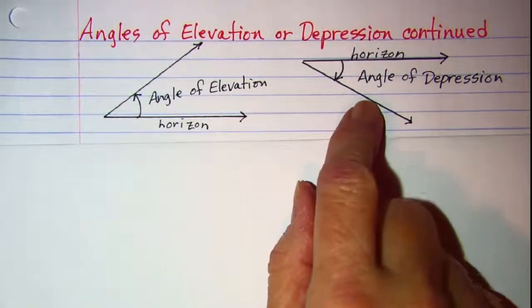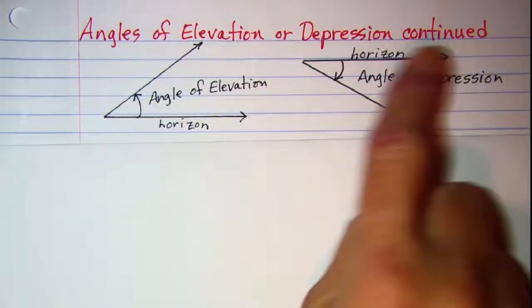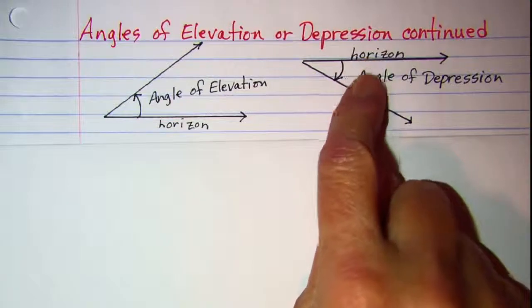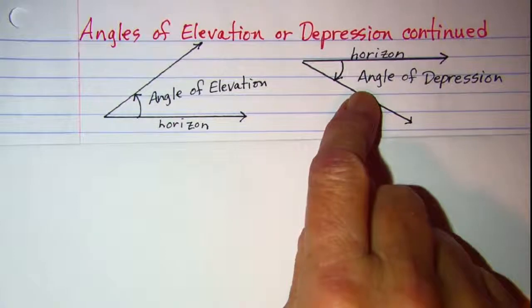For an angle of depression, again, we need the horizontal line, and this time we'll move clockwise and the angle of depression goes down from the horizontal.